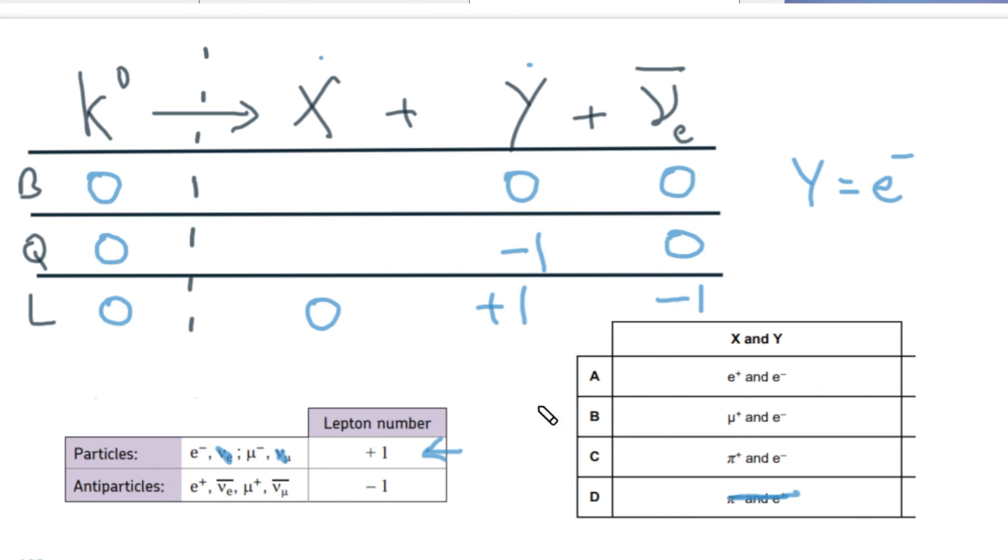Let's complete Y's column - we know it has a baryon number of zero and a charge of minus one. That tells us about X: X must have a baryon number of zero but a charge of plus one and a lepton number of zero, so it's not a lepton. That means it can't be a positron and it can't be a muon, which really only leaves the pi. A pi meson is not a baryon, has a charge of plus one, and is not a lepton, so X is a pi plus. Well, I hope that was useful for you.